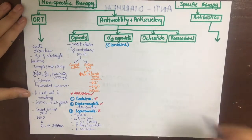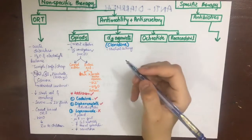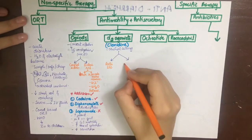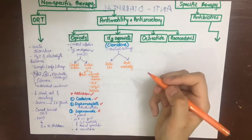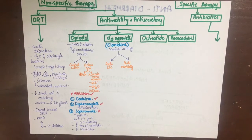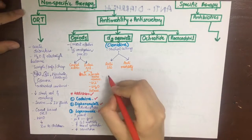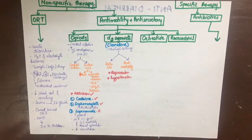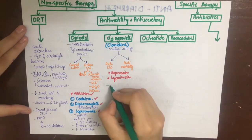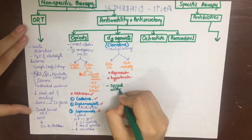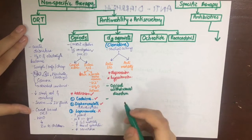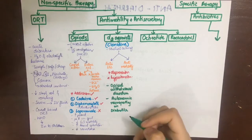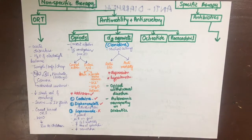The alpha-2 receptor agonist used is clonidine, a centrally acting alpha-2 receptor agonist. It has two main actions: anti-secretory and anti-motility — the chief effect being the anti-secretory activity. Side effects include depression, due to decreased norepinephrine release, since the alpha-2 receptor is an autoreceptor. It also causes hypotension due to decreased sympathetic outflow. Its uses include treating diarrhea due to opioid withdrawal and diarrhea associated with diabetic neuropathy.